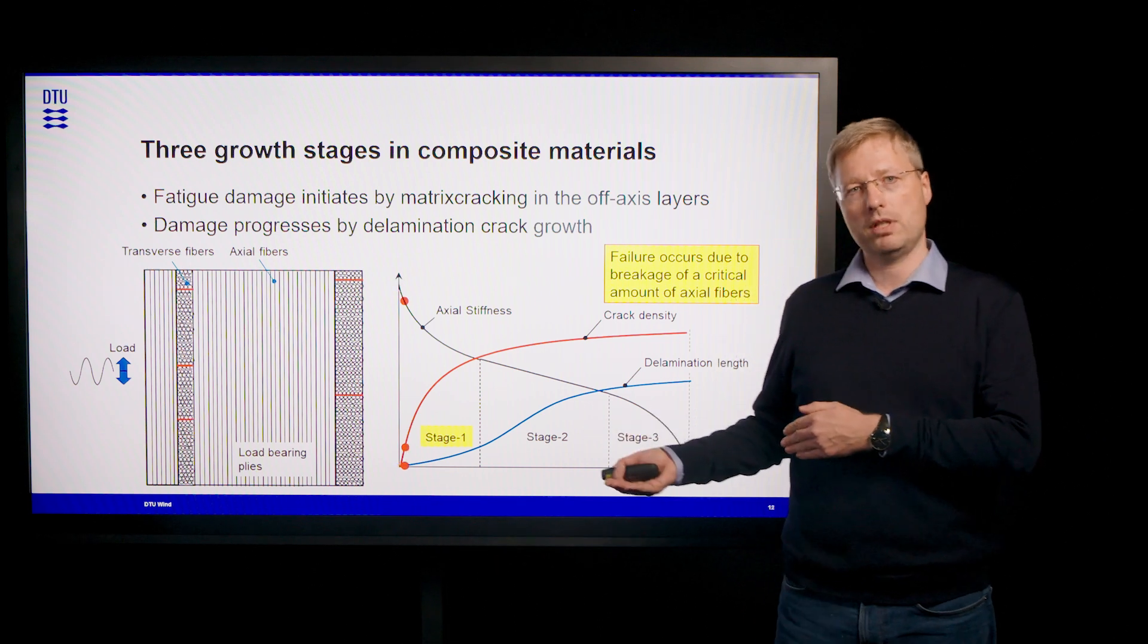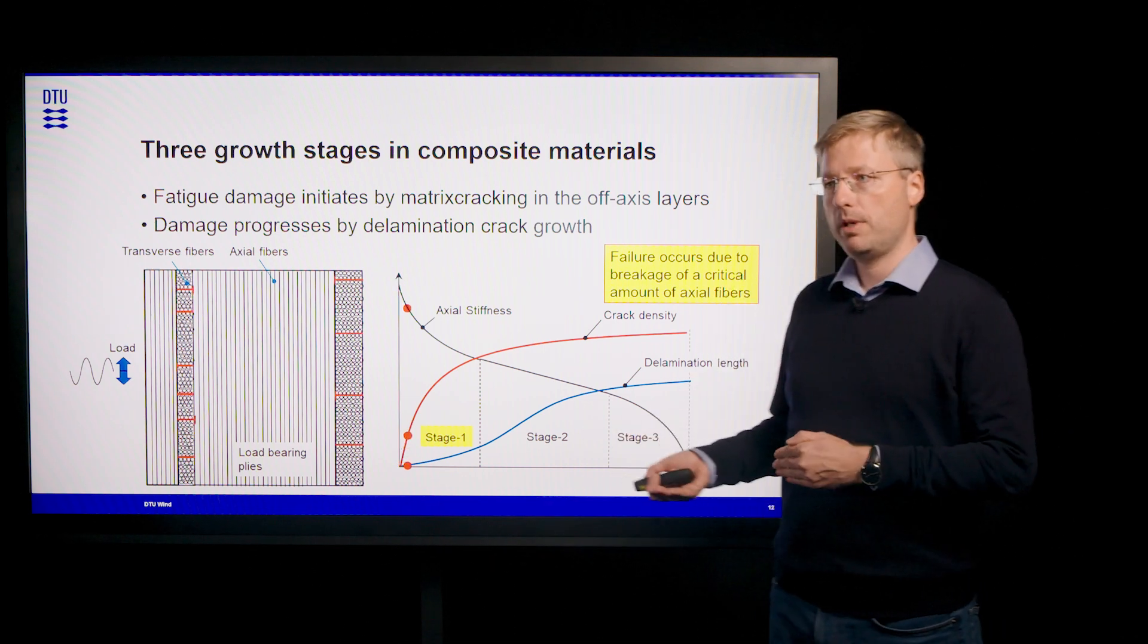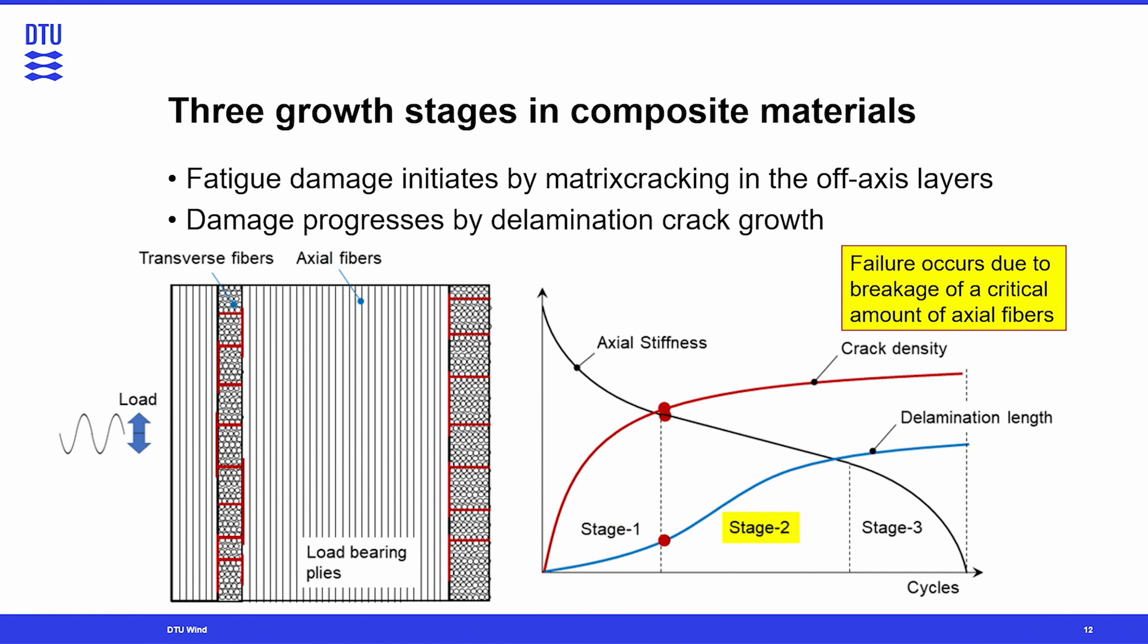And that is what's called the fast fracture, where we will have fiber breakage. So more and more fibers in the load bearing plies will break. And at some point, those fibers will not be able anymore to sustain the fatigue load that has been applied. And then the composite laminate fails.